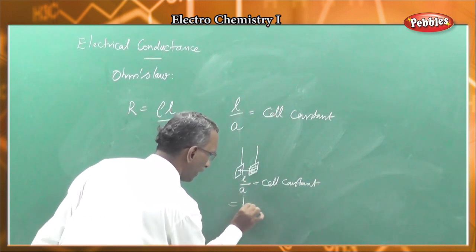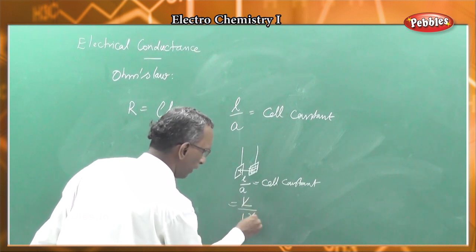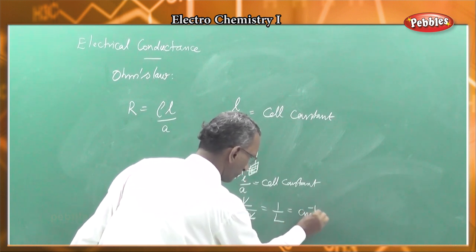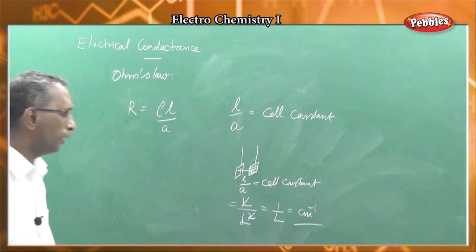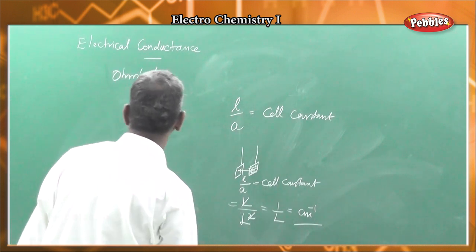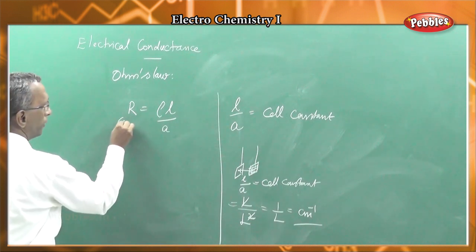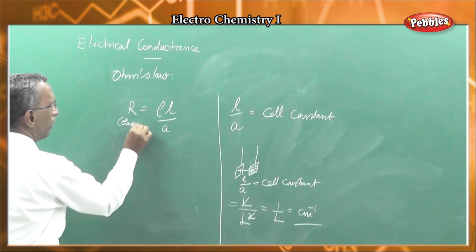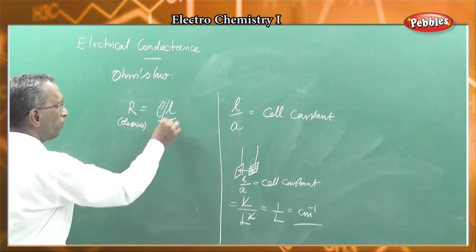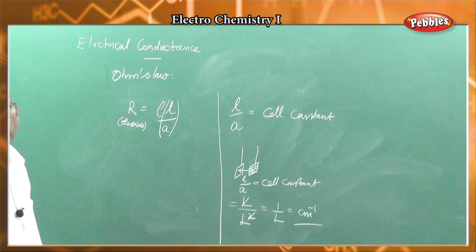The dimension of L by A: length has dimension L, area has dimension L squared, so L by L squared equals 1 by L. Therefore, the unit of cell constant is centimeter inverse in CGS units. R on the right side is the observed resistance, and it represents the resistance offered by unit volume when the cell constant is unity.